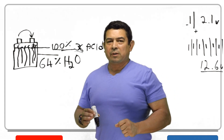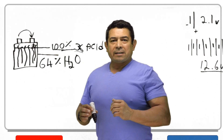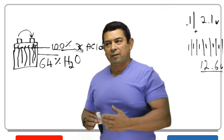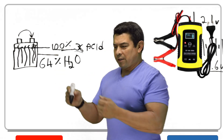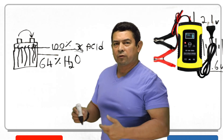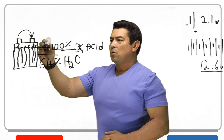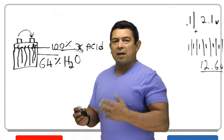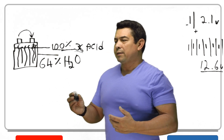Now we're not going to have time to get into specific gravity, but that's one of the ways we can test the battery — by a hydrometer, by checking the specific gravity. Or nowadays you just plug those testers in and it will tell you if your battery is good or bad. Basically it's telling you what the mixture is of sulfuric acid and water.